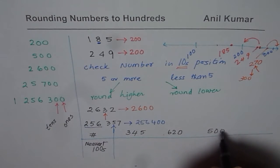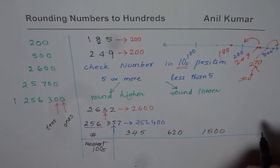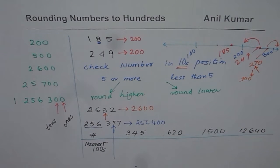Let's say 345, 620, 1,500, we can write 12,640. You need to round these numbers to nearest hundred. You can pause the video, answer the question and then look into my answers.